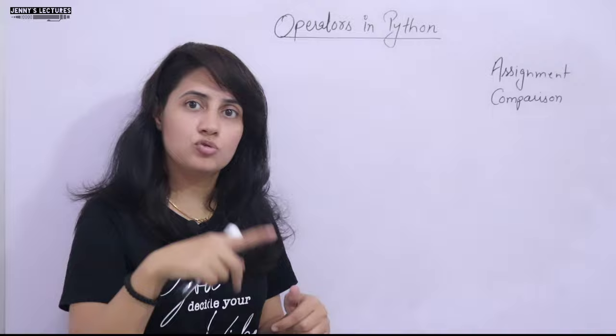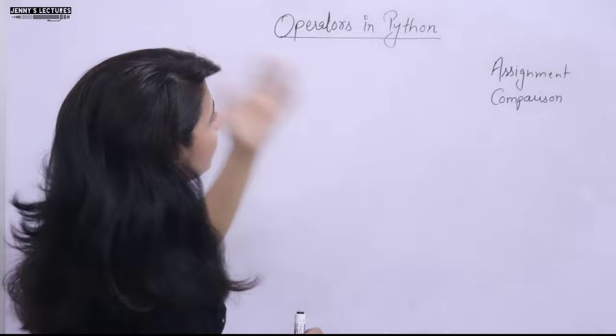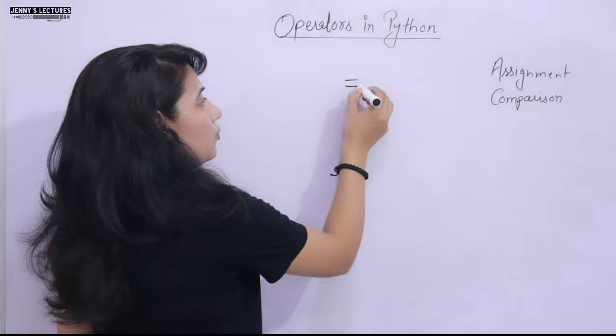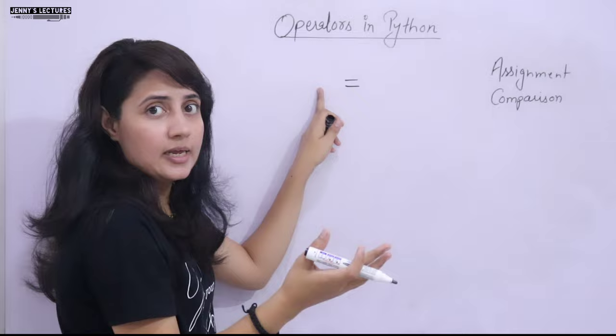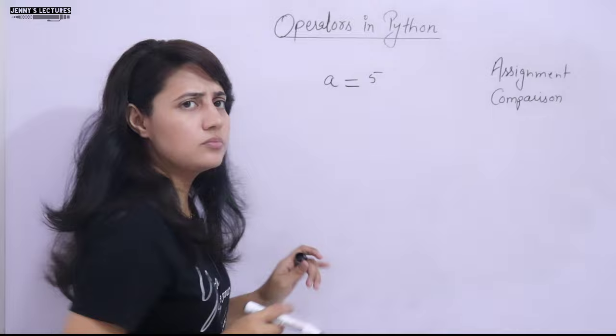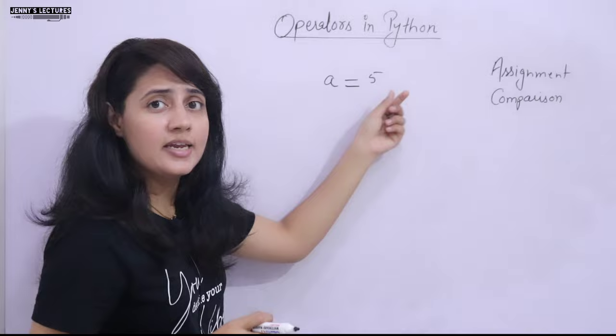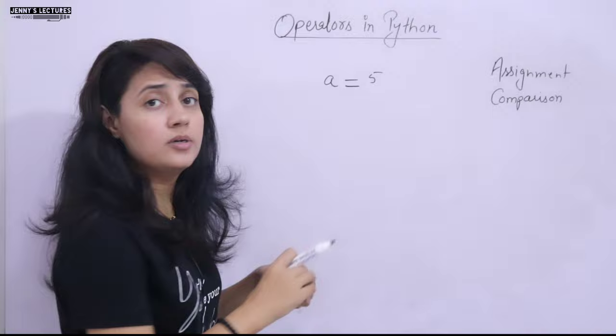Now, the assignment operator is used to assign a value to a variable. If I write 'a = 5', this is the assignment operator. On the left-hand side we write the variable name — a, b, c, x, y, z, or anything. Here I'm taking 'a', so 'a = 5' means we are assigning the value 5 to a. The value is on the right-hand side.